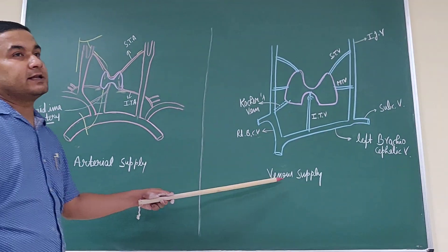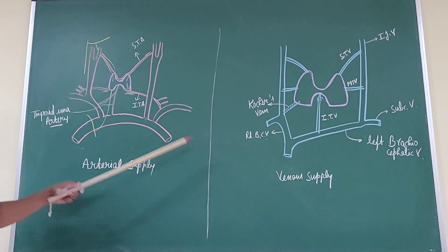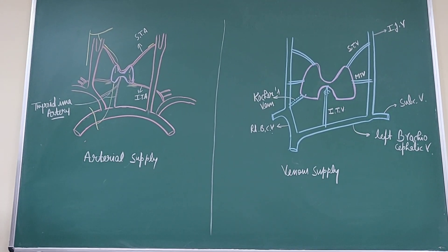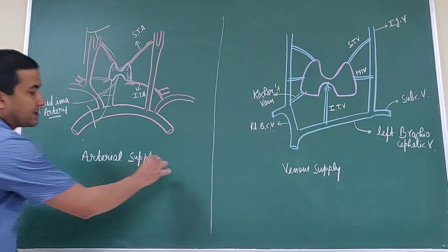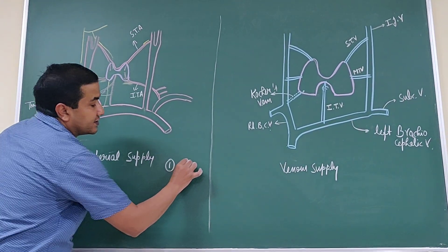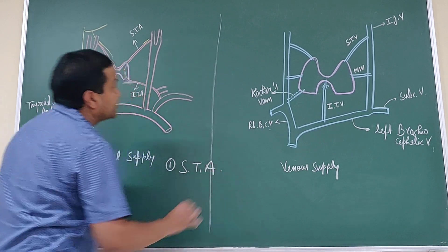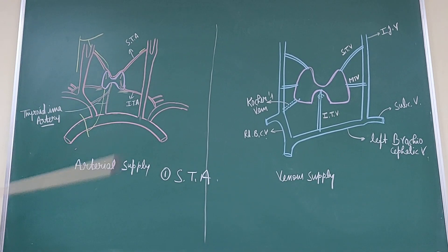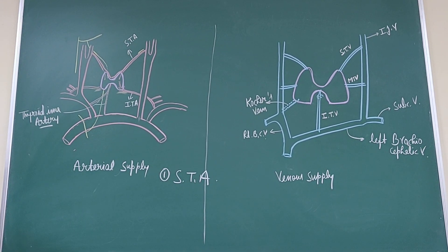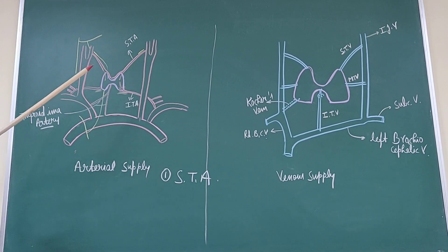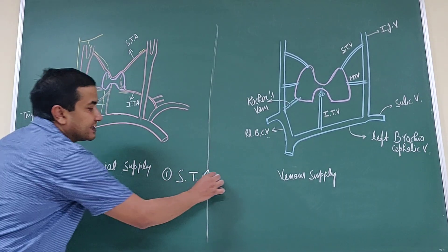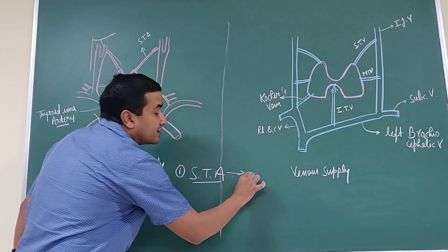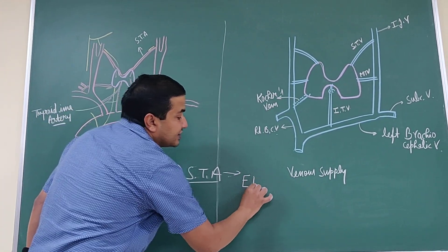The arterial and venous supply of the thyroid gland. The thyroid gland is mainly supplied by the superior thyroid artery, which is a branch of the external carotid artery. This superior thyroid artery is closely related with the external laryngeal nerve.